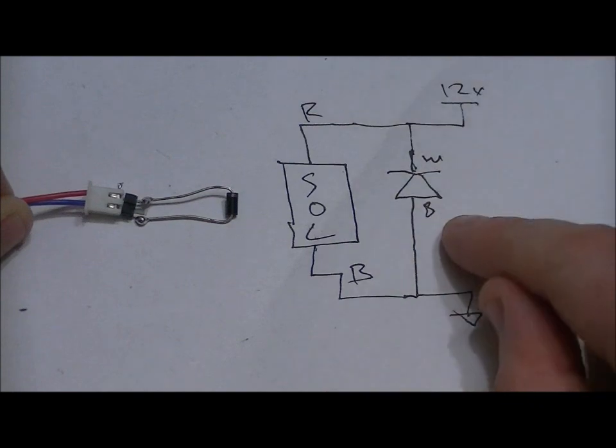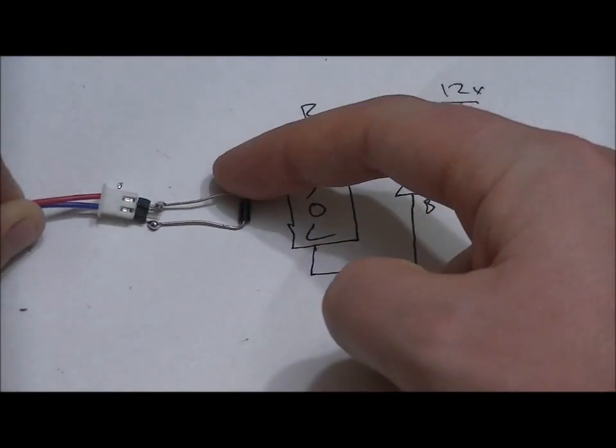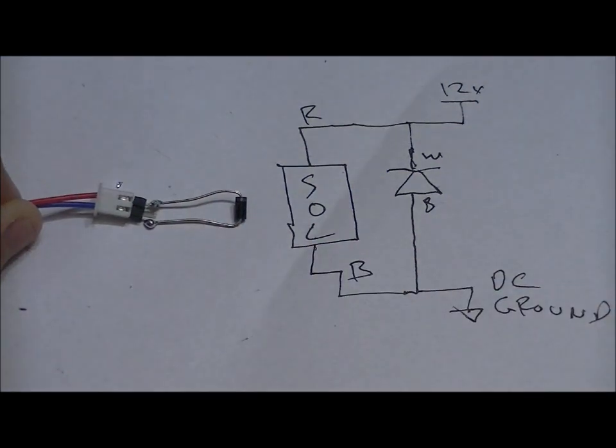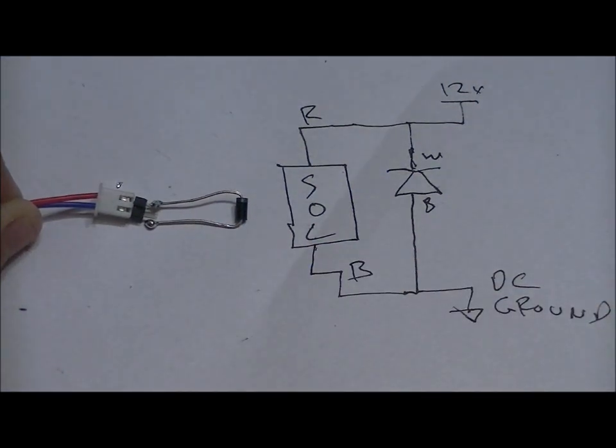So this is the diode shunt. We're going to connect 12 volts right here. As you can see the white stripe is right there. And we're going to connect ground right there. And what's going to happen is it's going to pull the plunger in, and it's going to draw about 750 milliamps at 12 volts.